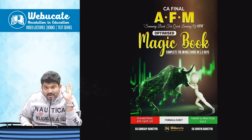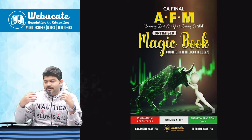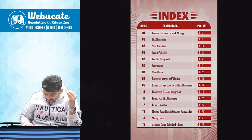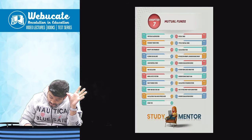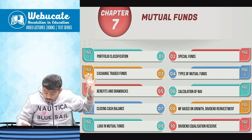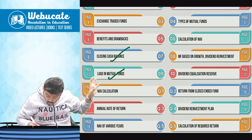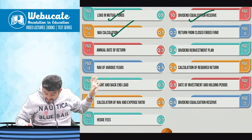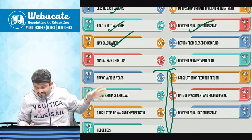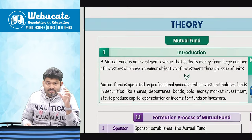There are more than 200 plus formulas in AFM. I am sure you would have made your own notes, but at times we tend to skip. But as a professor, I know that everything has to be covered and I will show you this magic book and you will realize how important it is. For example, I am taking the chapter mutual funds. This chapter has a lot of concepts: closing cash balance, load, dividend equalization, reserve, NAV calculation, and also some very important questions which can be asked in the examination. If I have to summarize everything at one place, this is where the magic book will become so important.